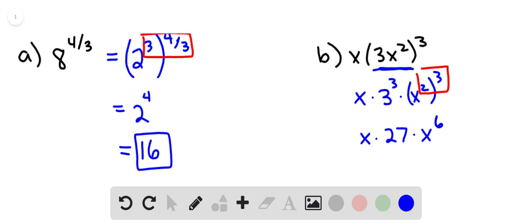Now remember that that x in the front is really x to the 1st power, and you can add the exponents on x, and you will get x to the 7th. So we have 27 times x to the 7th power.